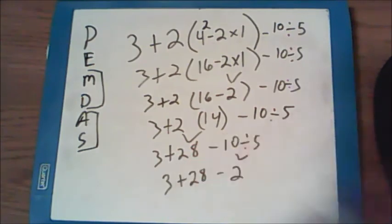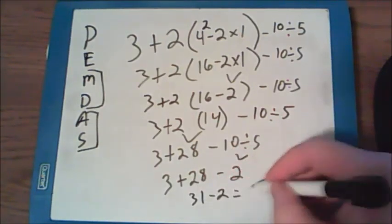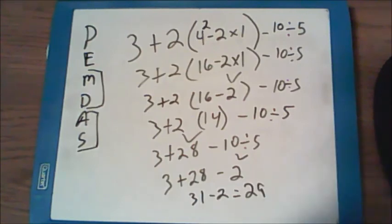So I'll work this last step out from left to right. 3 plus 28 is 31. Minus 2 gets me back down to 29 for my final solution.